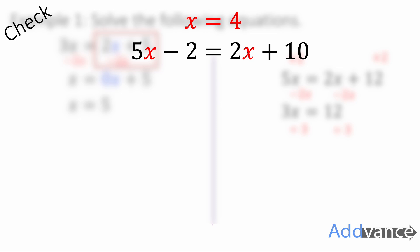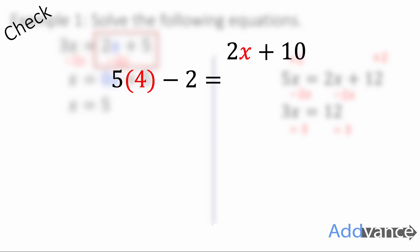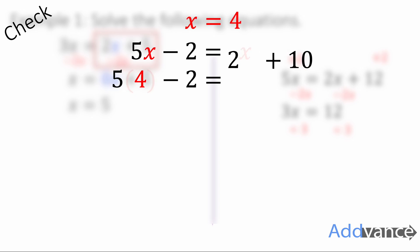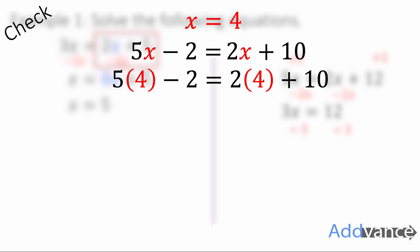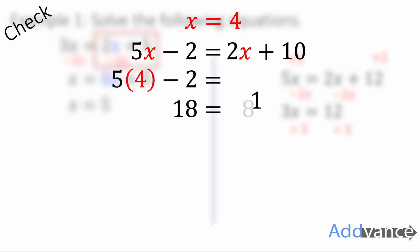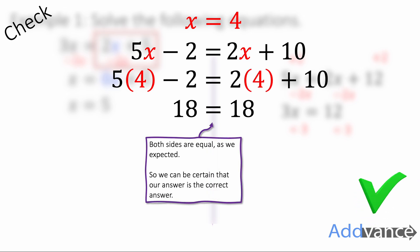However, we can check by substituting our answer back into the original equation. We're going to replace the x with 4 in the equation, on the left hand side and on the right hand side. 5 times 4 minus 2 is equal to 2 times 4 plus 10, and we're just going to check that both sides are equal. 5 times 4 is 20, subtract 2 gives 18 on the left hand side. On the right hand side, 2 times 4 is 8, plus 10 is 18. Both sides are indeed equal, so we can be very confident the answer is correct.